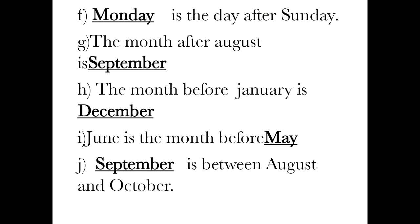Number G: the month after August is dash — September. Number H: the month before January is December. Number I: June is the month before dash — July. Number J: dash is between August and October — September.